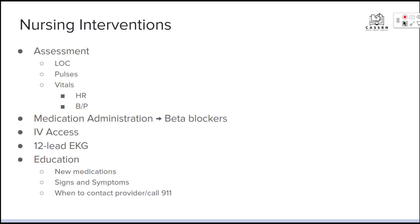Our nursing interventions are going to include an in-depth assessment — we're going to look at their level of consciousness, see if their pulses are palpable, and monitor their vital signs, particularly heart rate and blood pressure. We may do medication administration that could include beta blockers. We'll want to make sure we have IV access and a 12-lead going. Then education — once the patient is settled, we educate them about any new medications, the signs and symptoms of their condition, and when to contact the provider or call 911.